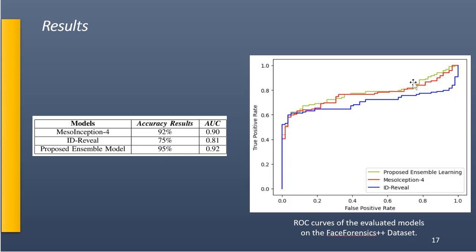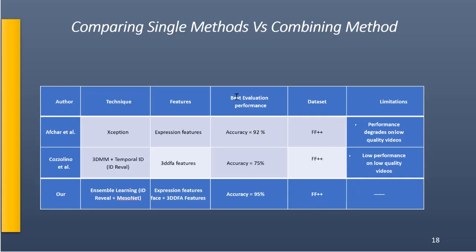This improvement is also shown in the ROC curves in green, displaying the true positive rate versus the false positive rate across multiple trainings and experiments, evaluated on the FaceForensics++ dataset. Comparing our method with Afchar et al.'s MesoInception and Cozzolino et al.'s ID-Reveal, our method achieves higher accuracy by combining MesoInception features, expression features, and temporal 3D features. The comparison was fair as we used the same dataset.